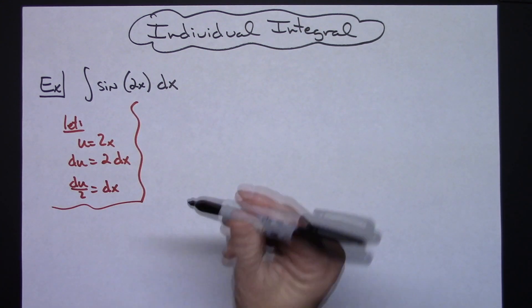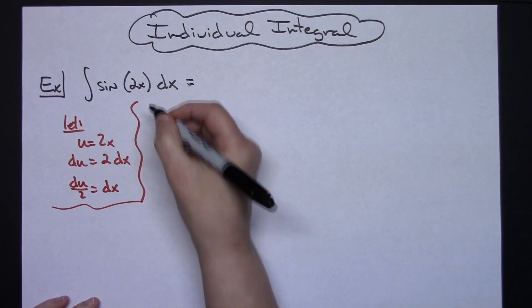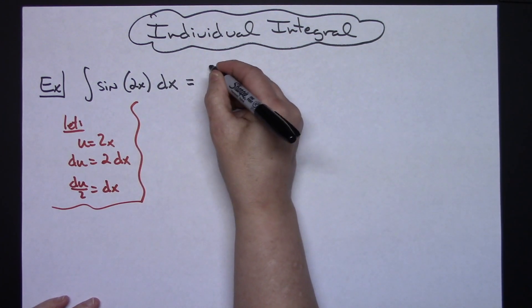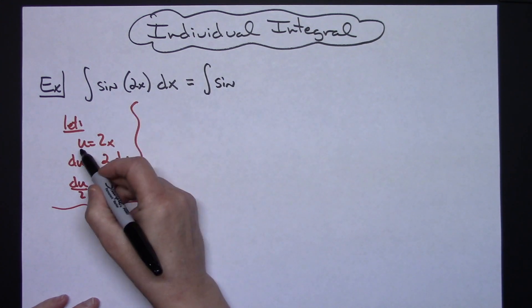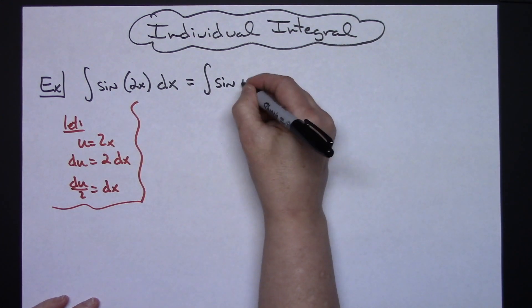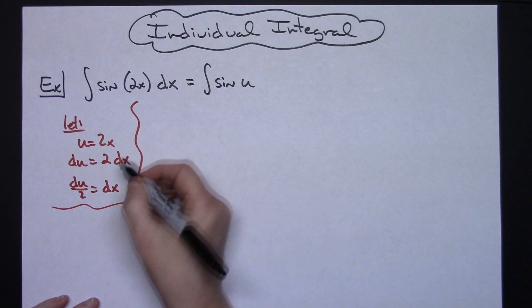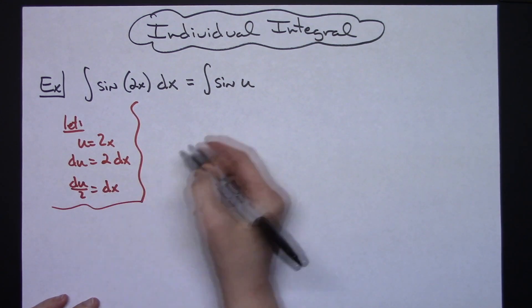After completing that step then we're going to come back up here and we are going to rewrite this integral making as many substitutions as we can. So we'll have the integral of sine and then I had said u was going to be 2x so it'll be sine u. I'm going to replace my dx with a du over 2.